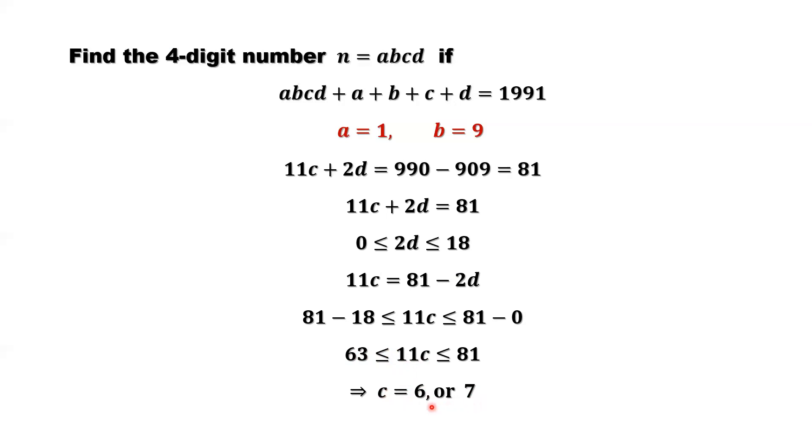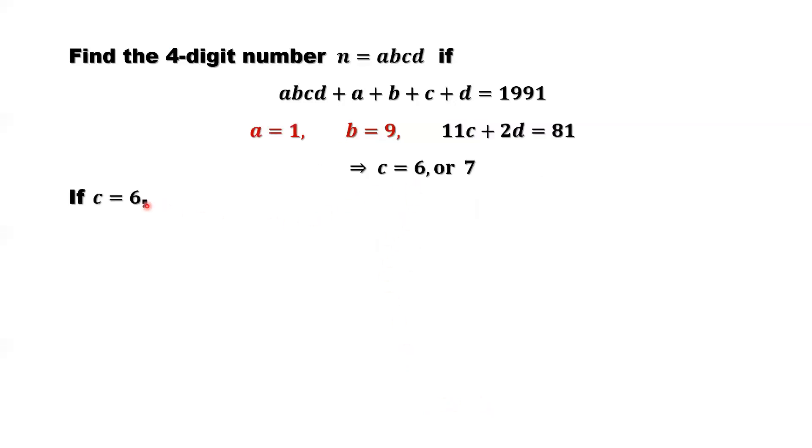We consider 6 first, then consider 7. If C equals 6. Now here we have this equation here. Replace 6. So we can solve this equation for 2D. Replace C by 6. Imply 2D equals 81. 6 times 11, that's 66. Equals 15. 2D equals 15. So D equals 15 over 2, which is 7.5. D is an integer. Cannot be 7.5. So it is impossible. Impossible. What is our conclusion? C cannot be 6.